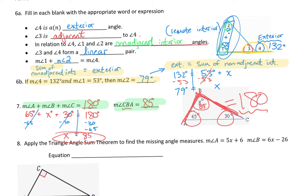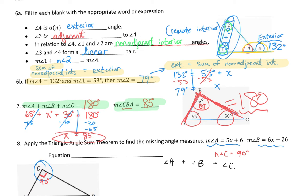The next one is a little more fun because it involves algebra. It says apply the triangle sum theorem to find the missing angle measure. They give us an expression for angle A and an expression for angle B, and they tell us that angle C has a little box, which means 90 degrees. So angle A plus angle B plus angle C is going to add up to 180.